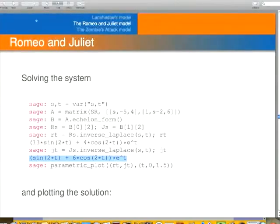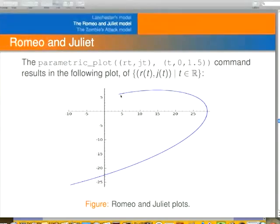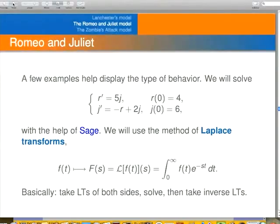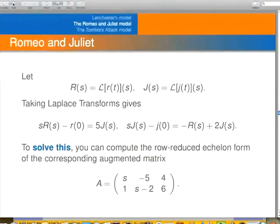Now we plot them using the parametric plot. And you see, this is how Romeo and Juliet's romance kind of spirals out of control. So that example was maybe, this example here was maybe a little too extreme for those coefficients.